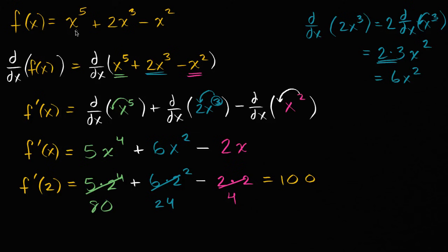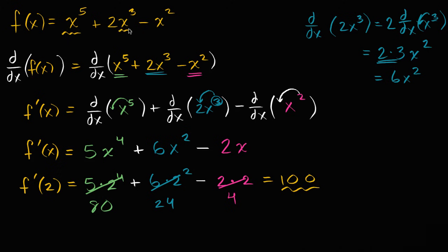So when x equals two, this curve is really steep — the slope is 100. If you were to graph the tangent line when x equals two, for every positive movement in the x direction by one, you move up in the y direction by 100. That makes sense: this is a pretty high-degree polynomial with x to the fifth plus x to the third, and we're subtracting a lower-degree term, so that's what you'd expect.